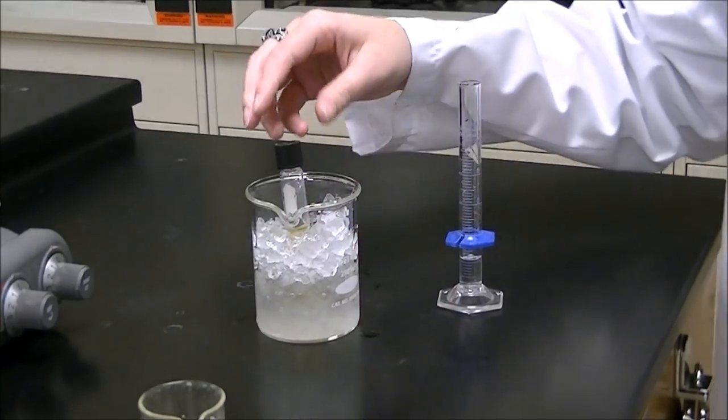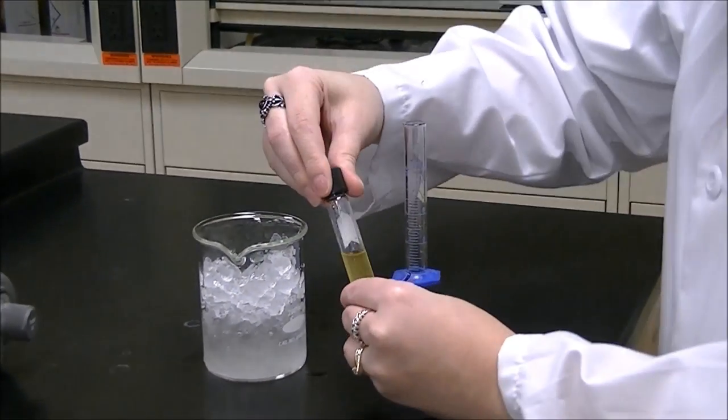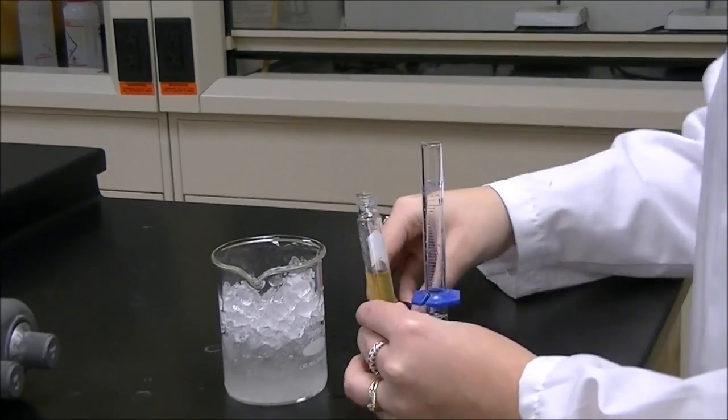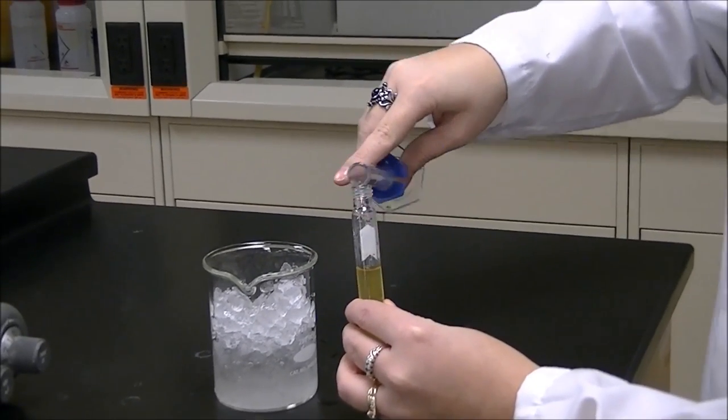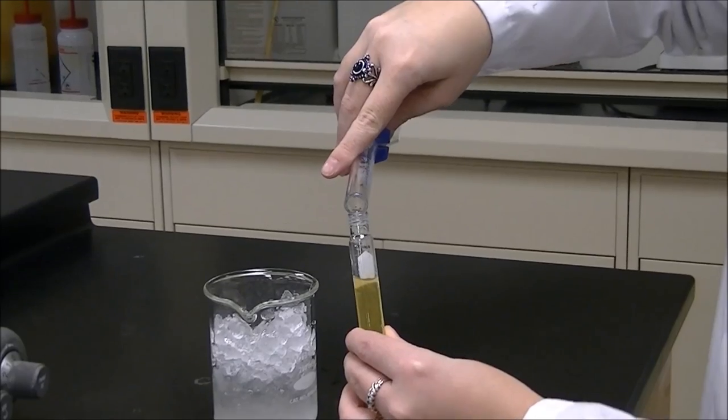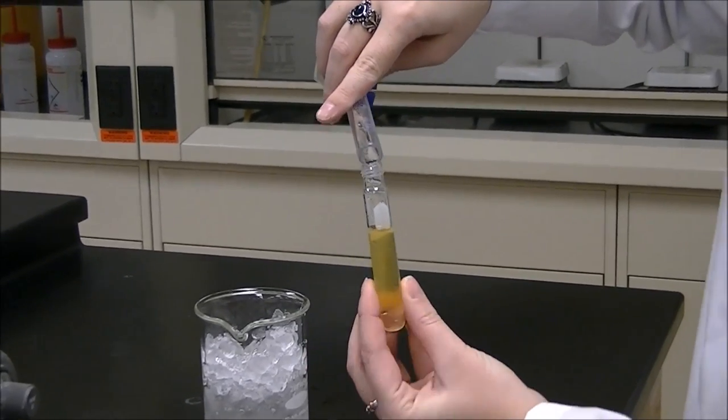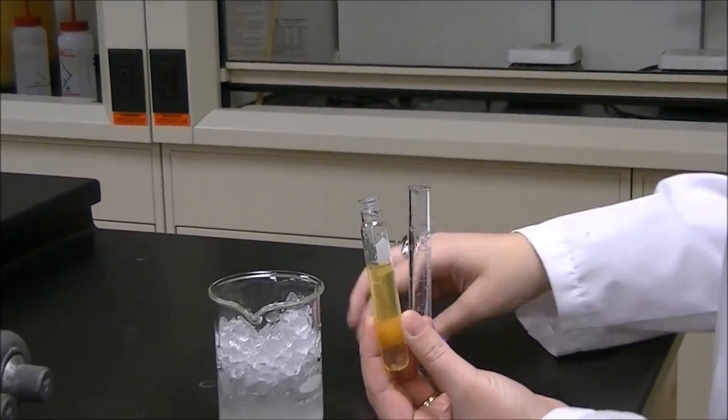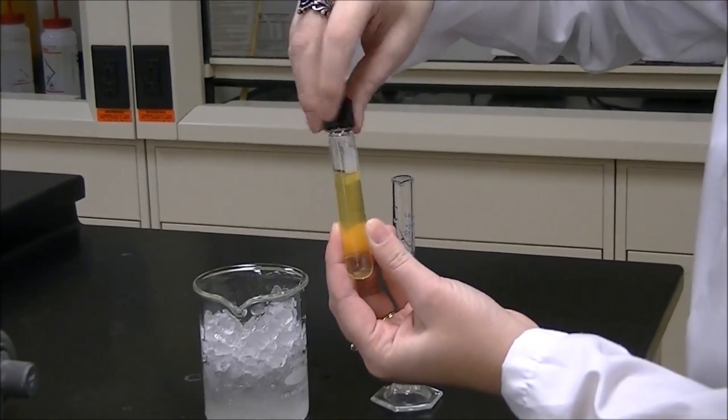After the centrifuge tube has cooled for three minutes, you're going to put 2 milliliters of methylene chloride into the centrifuge tube. This is where the extraction is going to occur as you invert the centrifuge tube several times.